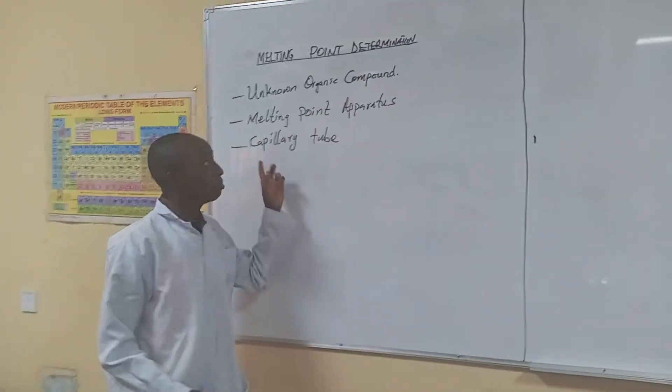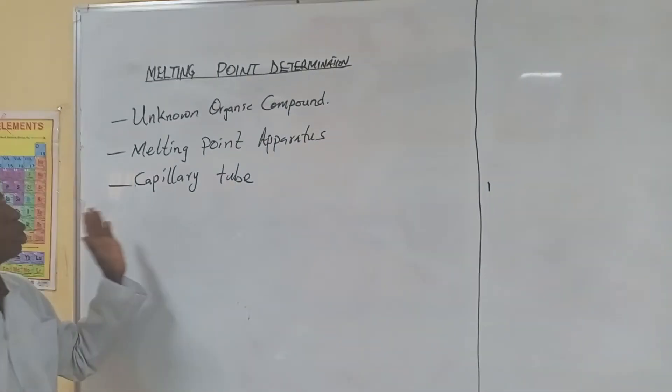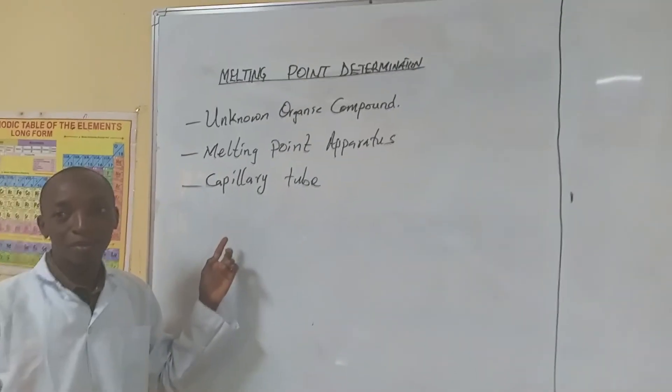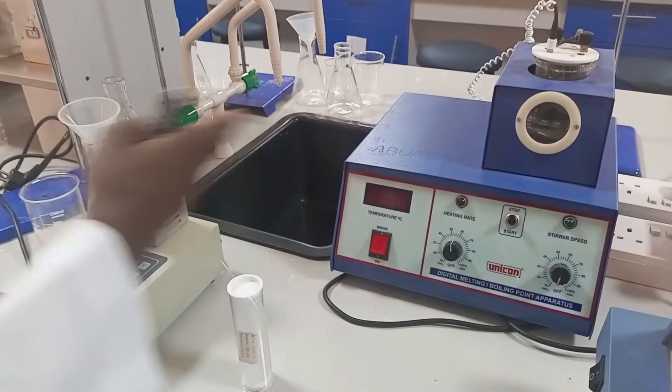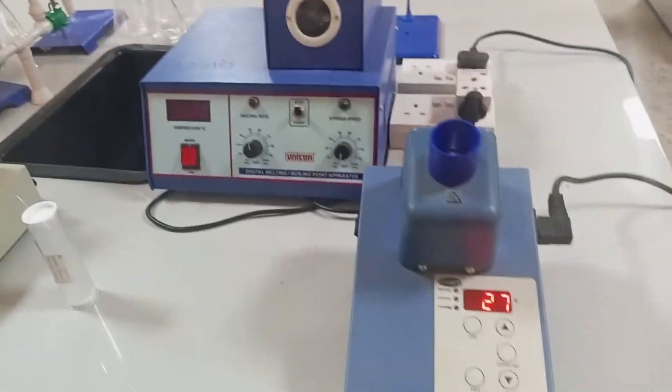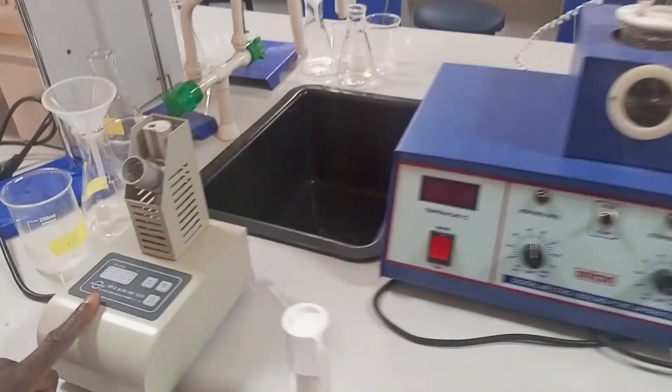In this video we want to determine melting points of an unknown organic compound. These are some of the available melting point apparatus in the lab ranging from Gumi to Unicorn to Swat.